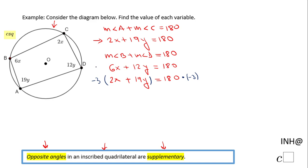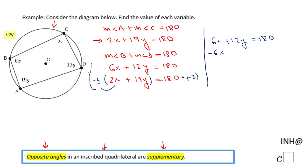I'm going to copy the first equation: 6X plus 12Y equals 180. Then I multiply the second equation by negative 3, which by the distributive property gives me negative 6X, and then negative 3 times 19 is negative 57Y, equals negative 3 times 180, which is negative 540.